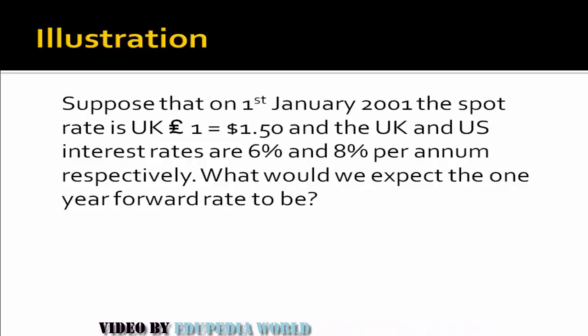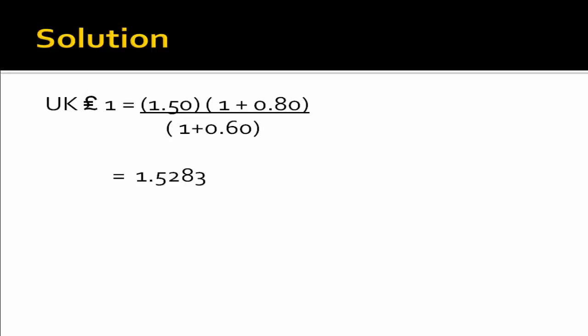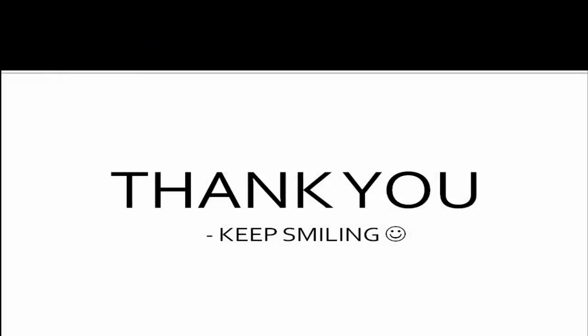Let's do a numerical example of IRPT. On 1st January 2001, the spot rate of UK pound 1 equals dollar 1.50, with UK and US interest rates of 6% and 8% per annum respectively. The one-year forward rate is calculated as: pound 1 = spot rate × (1 + dollar rate) / (1 + UK rate) = 1.50 × 1.08 / 1.06 = dollar 1.5283. Since the interest rate in the USA is more than in the UK, the currency with the lower interest rate — the pound — is at a premium compared to the currency with the higher interest rate. Thank you so much; in the next session we'll discuss further.